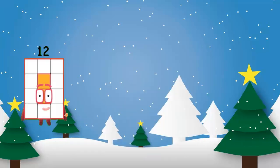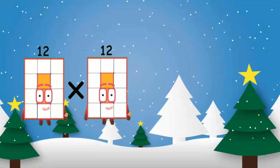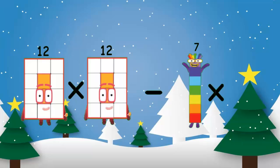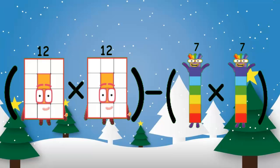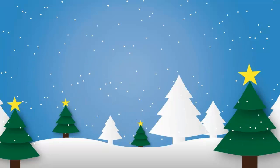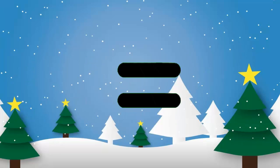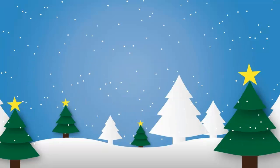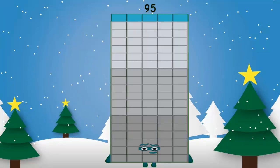12 multiplication 12 minus 7 multiplication 7, open bracket, equal to 95. Very clever.